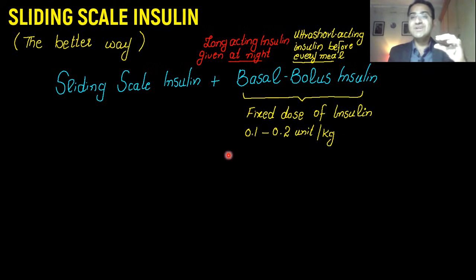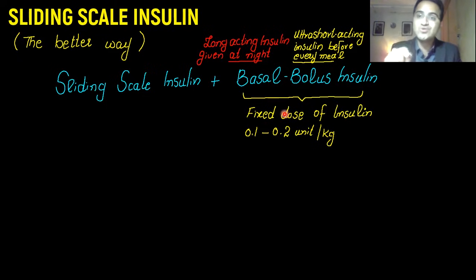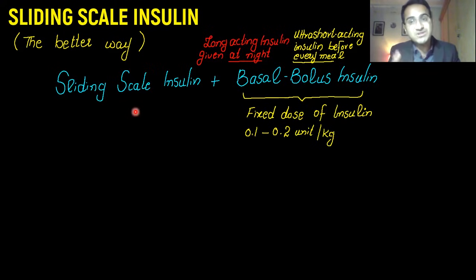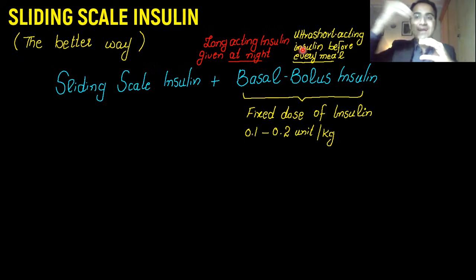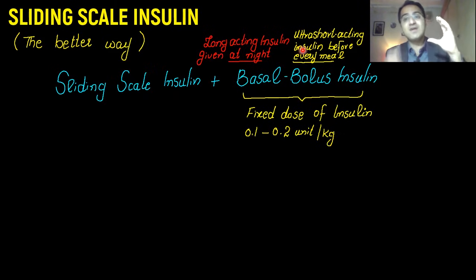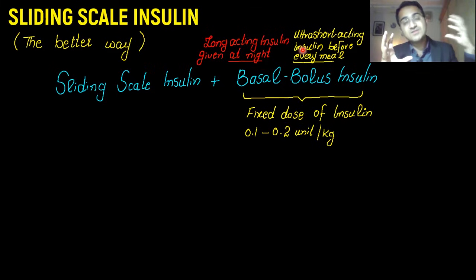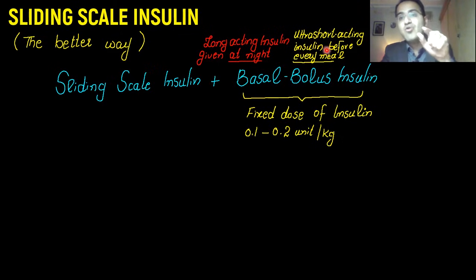A fixed basal bolus insulin dose is always there. The patient is taking a fixed amount of insulin from the basal bolus dose, and then you check sugar levels before each and every meal. If the sugar levels are not in control, you apply sliding scale insulin, calculate the extra insulin that patient needs, and add that extra insulin — according to the sliding scale — to the bolus dose. So you are taking the basal bolus as the base insulin and adding extra insulin calculated through sliding scale insulin.